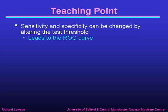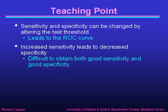So what we've learned is that sensitivity and specificity can be changed by altering the test threshold, and that leads to the ROC curve. Increasing the sensitivity will lead to decreased specificity, and it's difficult to obtain both good sensitivity and good specificity at the same time. That's the end of the fifth part of this lecture on diagnostic accuracy.